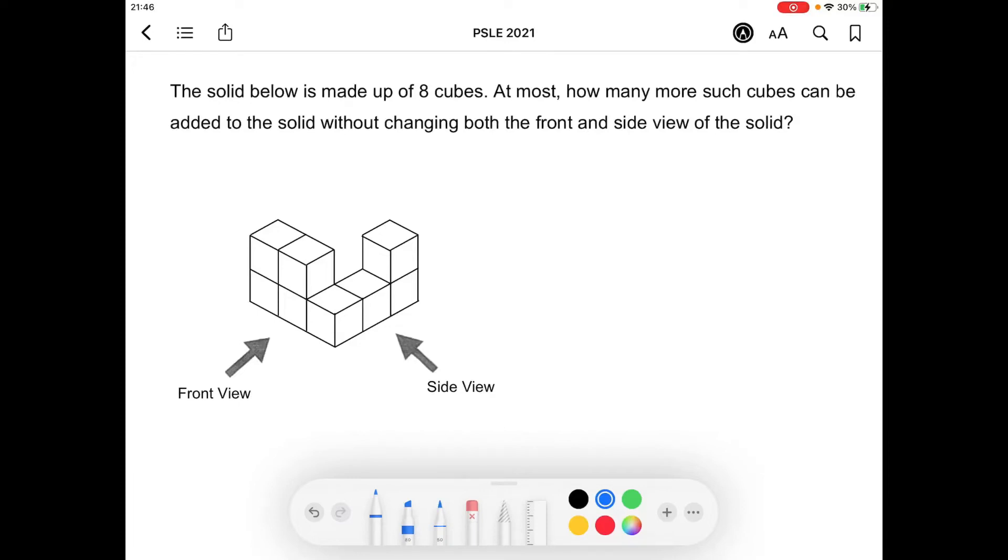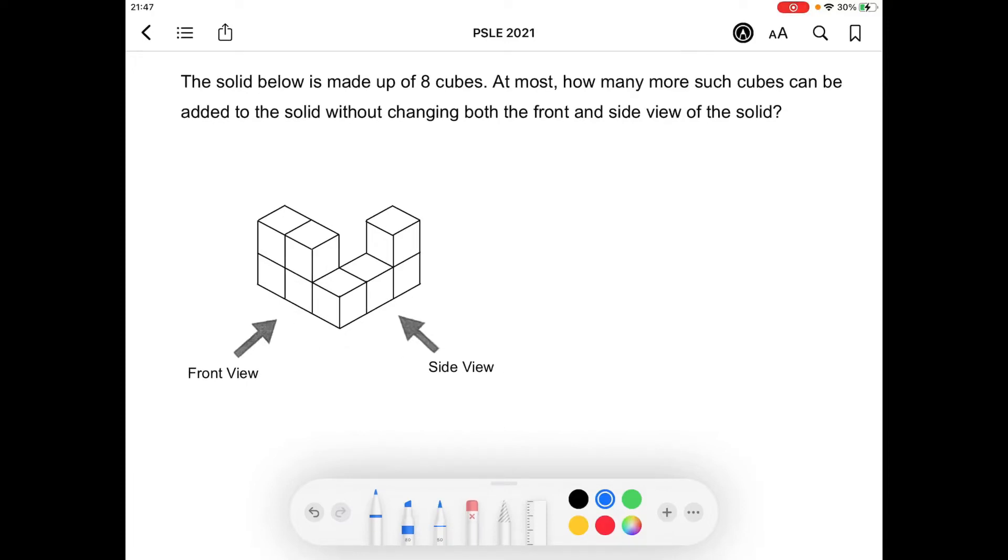The solid below is made up of eight cubes. I'll call the first level the bottom layer and the second level the top layer.